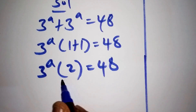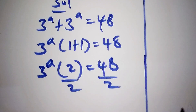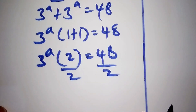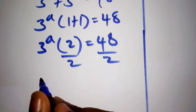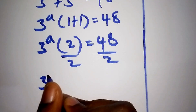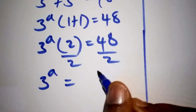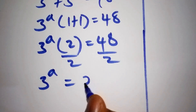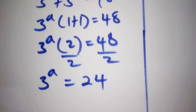So here we shall divide both sides by 2. Our result shall be 3 to the power of a is equals to 24.